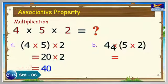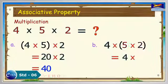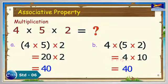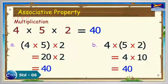4 into 5 into 2 equals 40. The whole numbers are associative under multiplication.